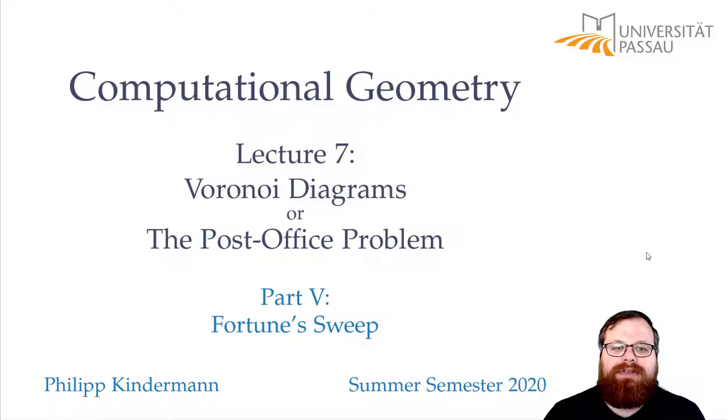So we know exactly what we have to compute to find the Voronoi diagram, which is the beachline at every point. But how exactly do we have to update it? How exactly does this work in practice?